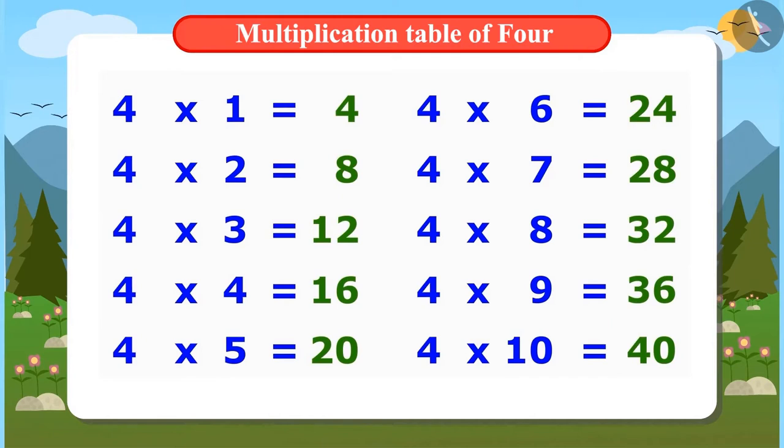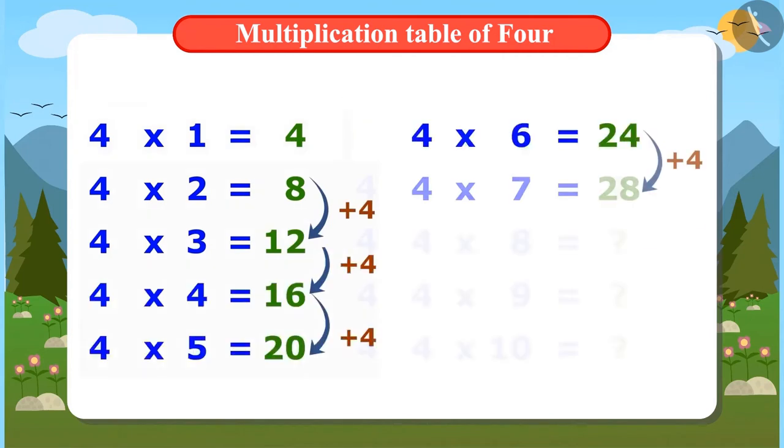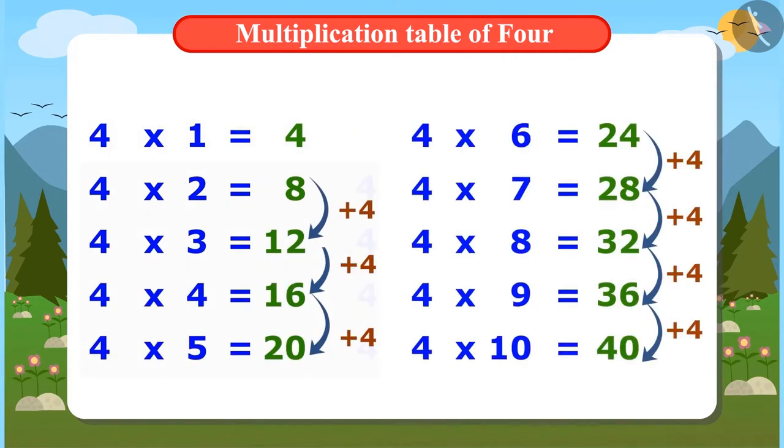This is fun. To find the multiplication table of 4, write 4 first and add 4 to it. Add 4 again to the result. Keep doing this till you get the whole multiplication table.